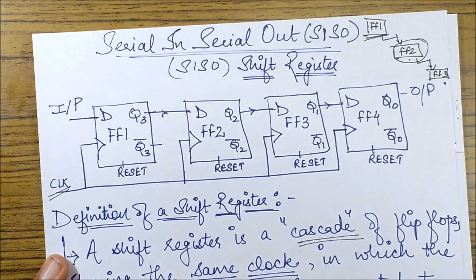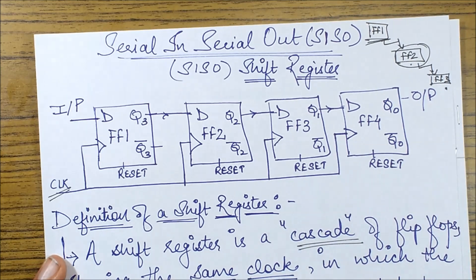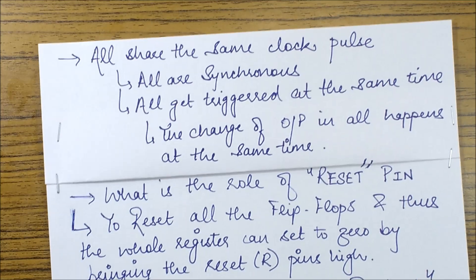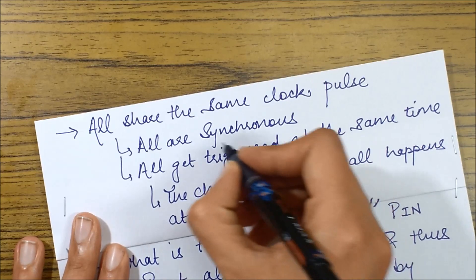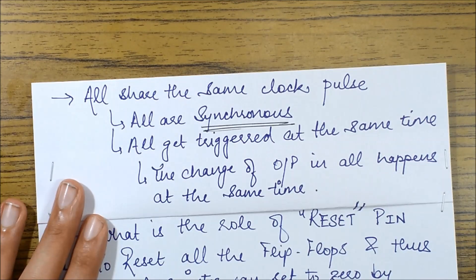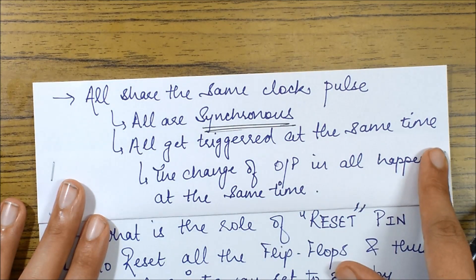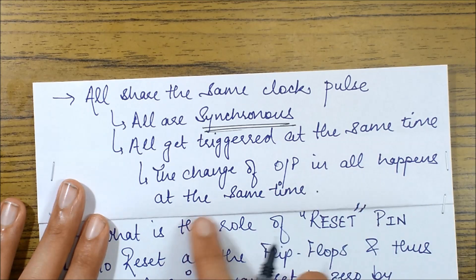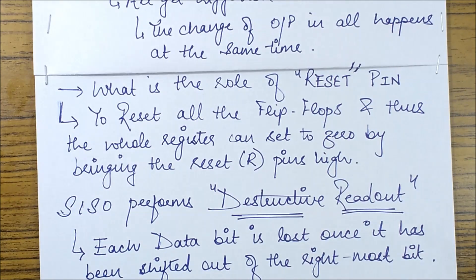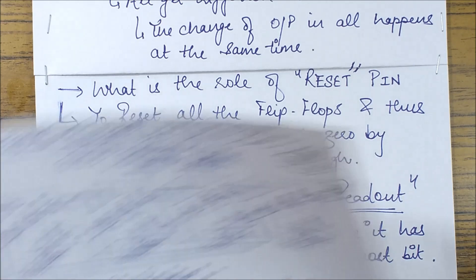So all will be triggered, that is all will be generating some kind of output whether that output is same as the previous state or it is something different depending upon the type of flip-flop used. So the essential concept is all will be triggered at the same point of time, all will generate some output at the same point of time. That is the concept of a synchronous thing.